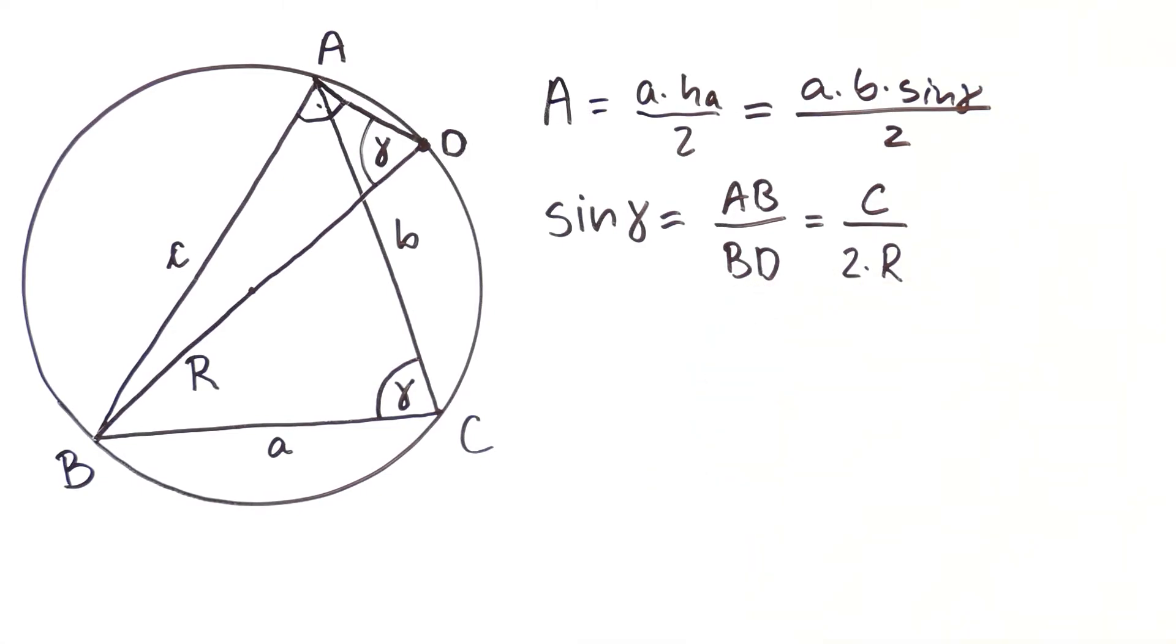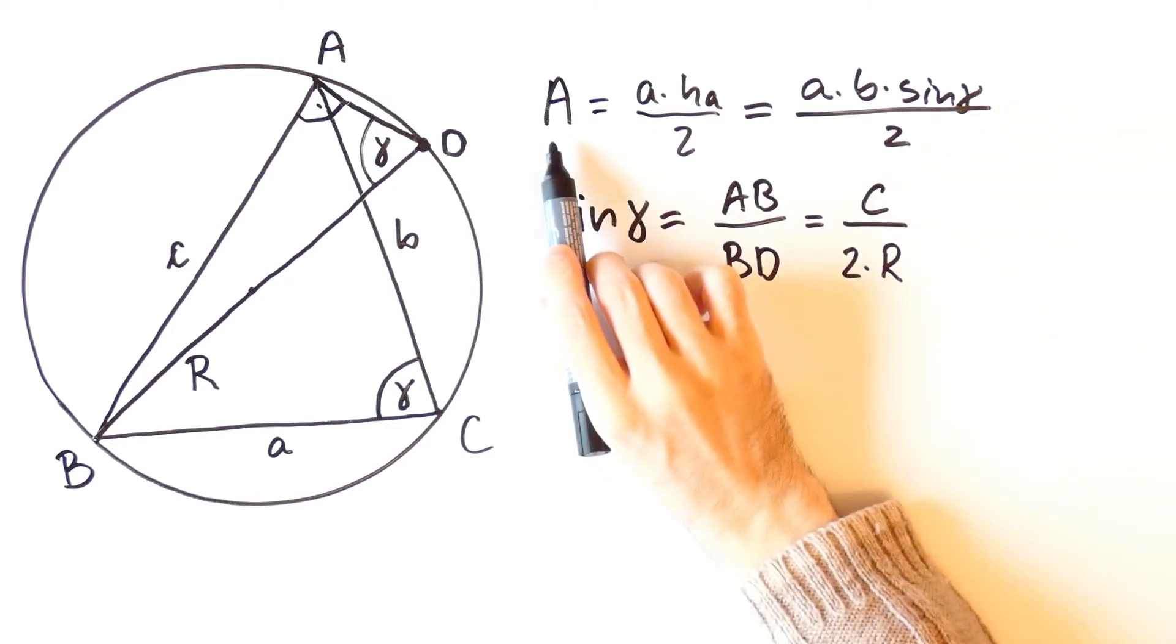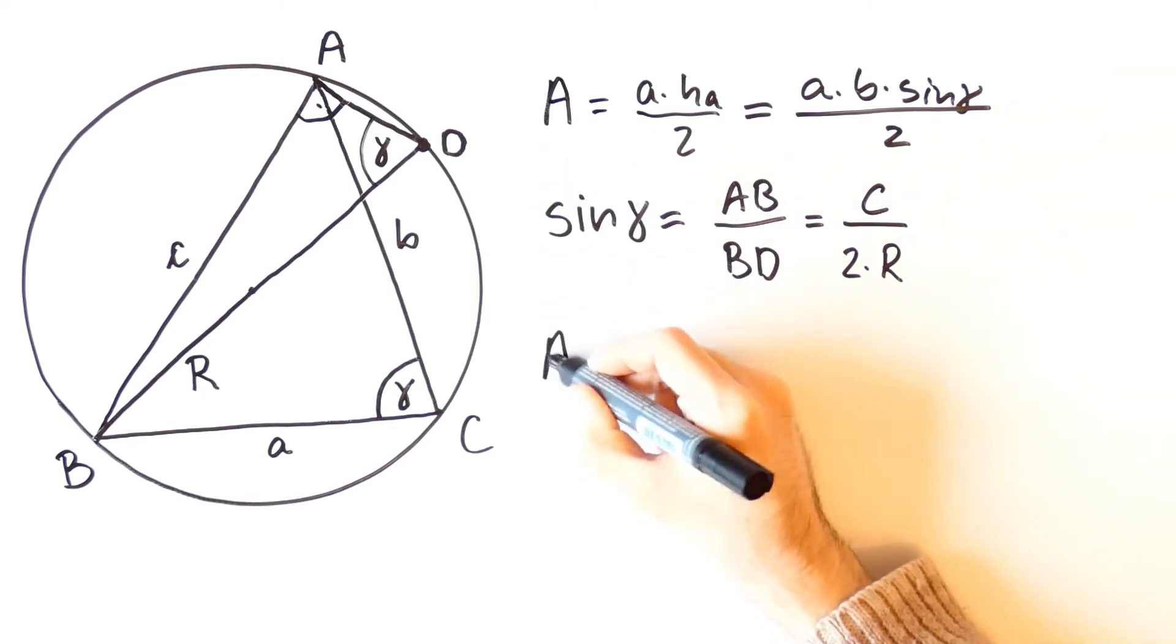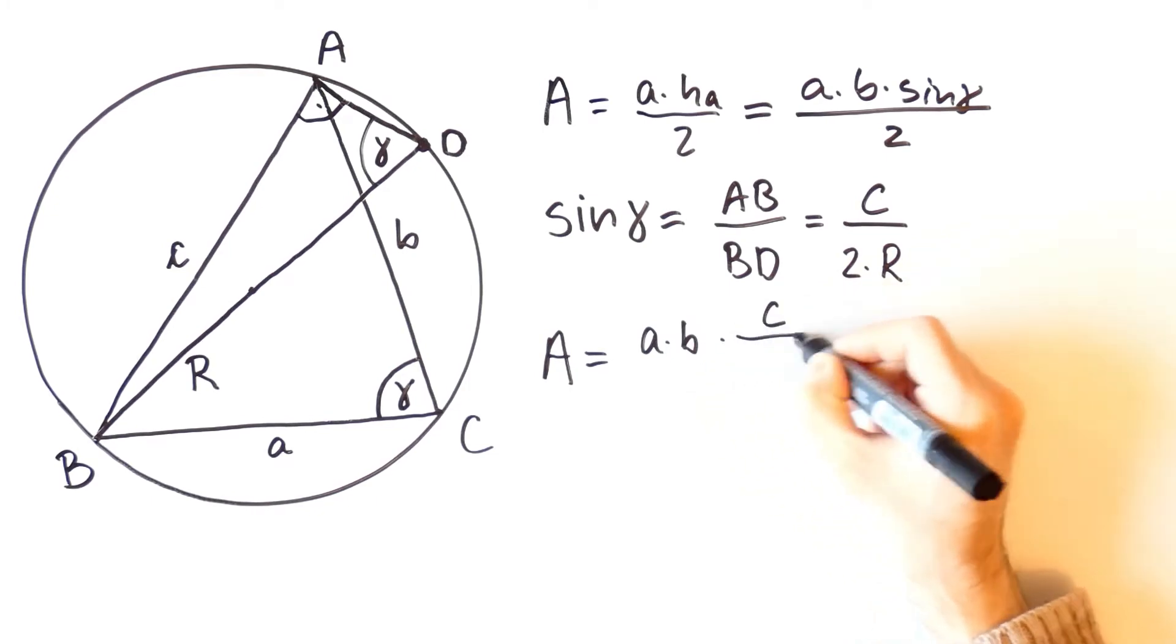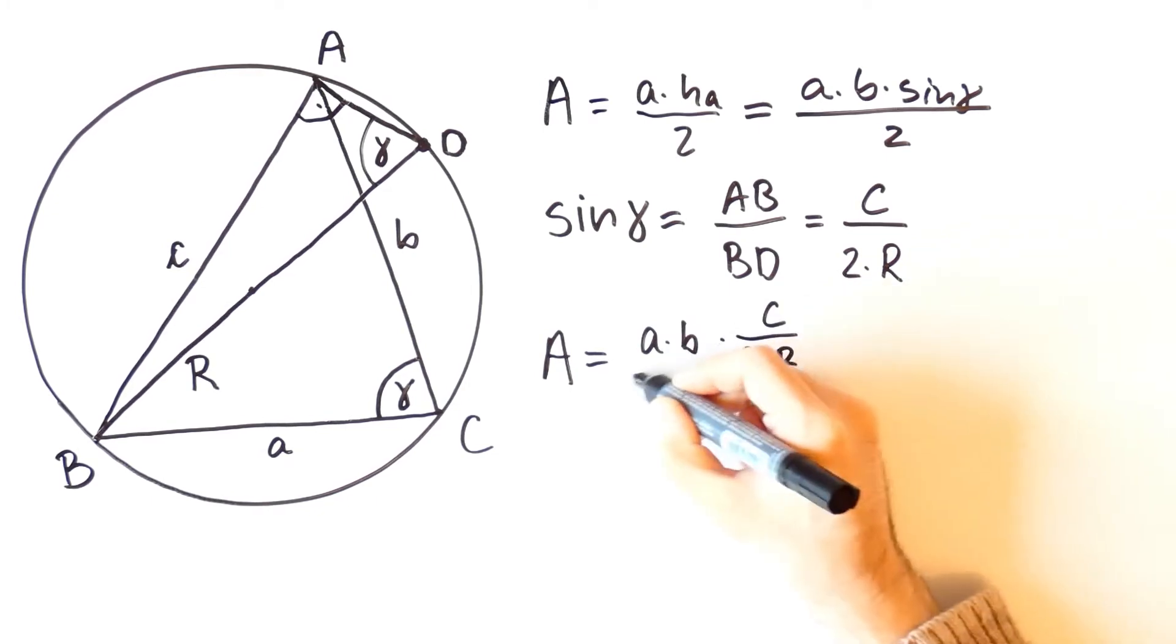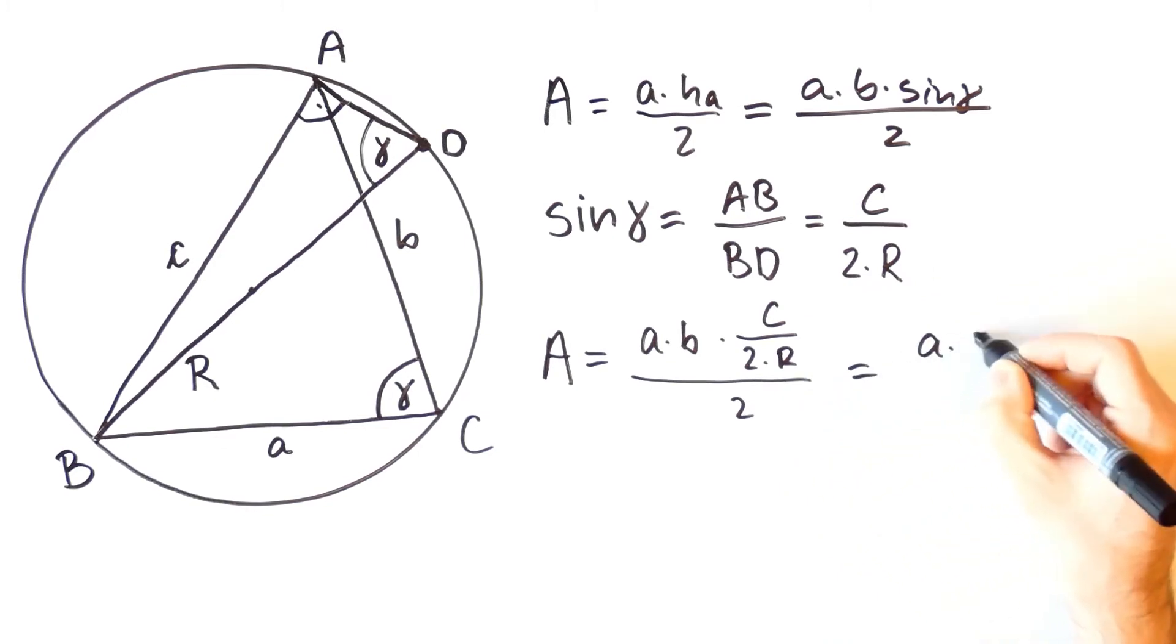Now, when we put this instead of the sine of gamma in the expression for the area, we get that the area is equal to A times B times C over 2 times R over 2, which is equal to A times B times C over 4 times R. Let's now return to our problem.